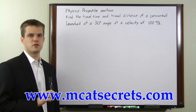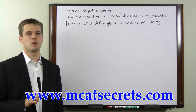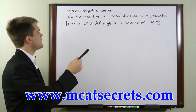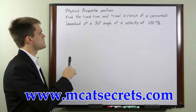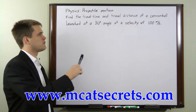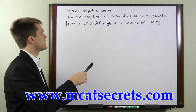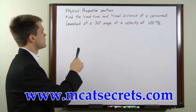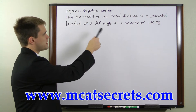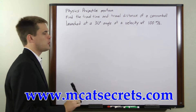What we have here is a two-dimensional projectile motion problem. We're told that a cannonball is launched at a 30-degree angle and at a velocity of 100 meters per second, and we're asked to find the travel time and travel distance of the cannonball.